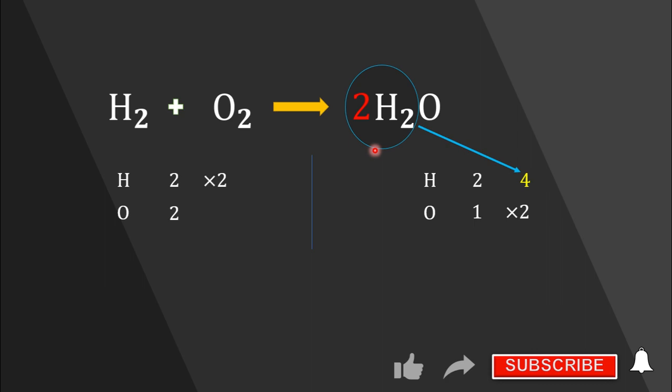Now our equation is balanced. In our balanced equation we have four hydrogen atoms and two oxygen atoms on each side.